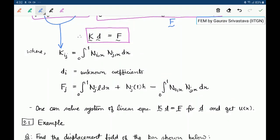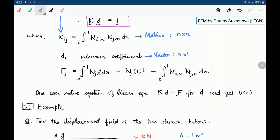So Kᵢⱼ is a matrix which will be of size n by n where n is the number of functions we have used. dᵢ are the unknown coefficients. This is a vector which is of size n by 1. And Fⱼ is the force vector in a way, which is also a vector of size n by 1.